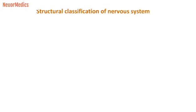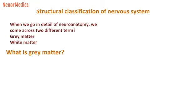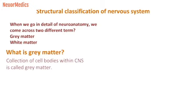Now I will discuss the structural classification of the nervous system. Before going into detail, we will discuss some basic terminologies, like what is gray matter and what is white matter. A collection of cell bodies within the central nervous system is called gray matter, and a collection of axons within the central nervous system is called white matter.